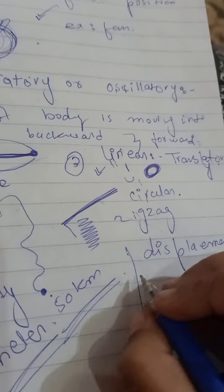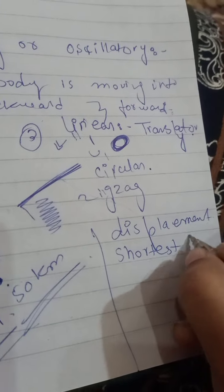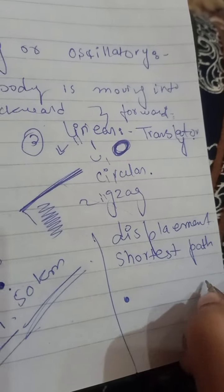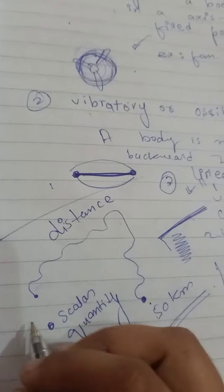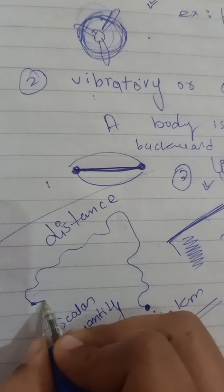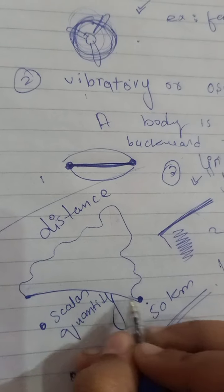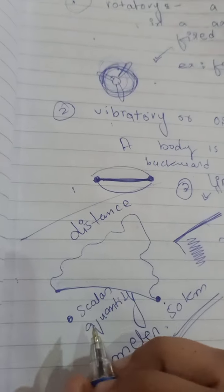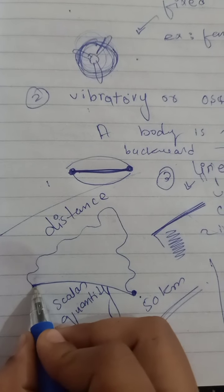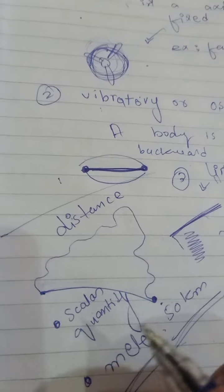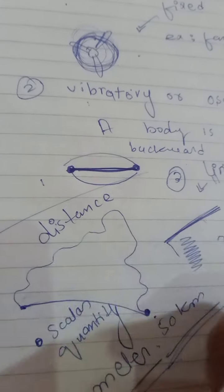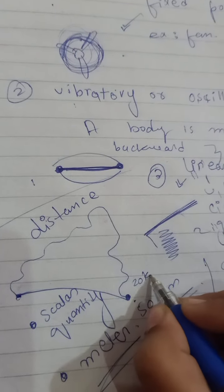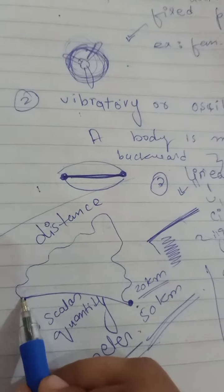The next topic is displacement. Displacement is the shortest path that a body has covered. For example, if a body moves along a longer path covering 50 kilometers as its distance, the shortest path between the starting and ending points is the displacement. With displacement, we also know the direction — for example, the body is moving east.